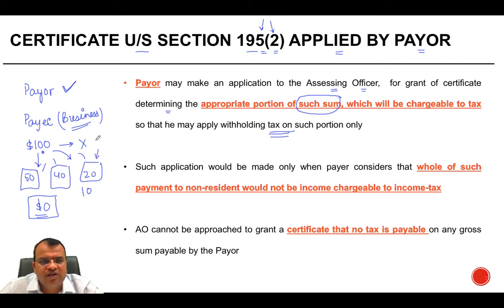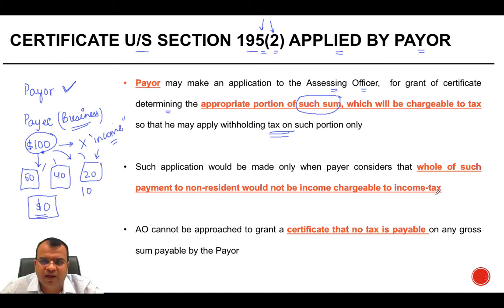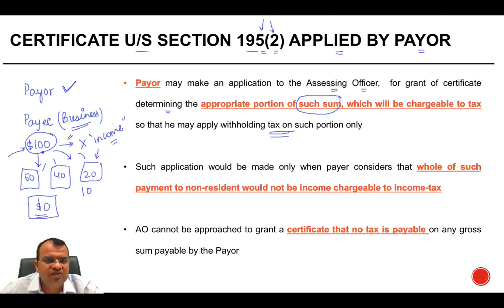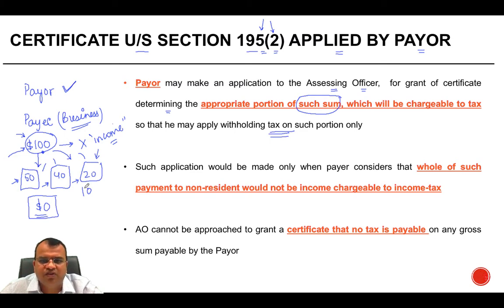From a legal perspective, the application can be made only to determine how much of such sum is chargeable to tax — in other words, to determine the income element comprised in the amount. Such an application would be made only when the payer considers that the whole of the payment to the non-resident would not be income chargeable to income tax. If the entire amount is chargeable to tax, he simply applies the tax rate without needing an application. It is only when he is unsure of the exact quantum that he can apply under Section 195(2).